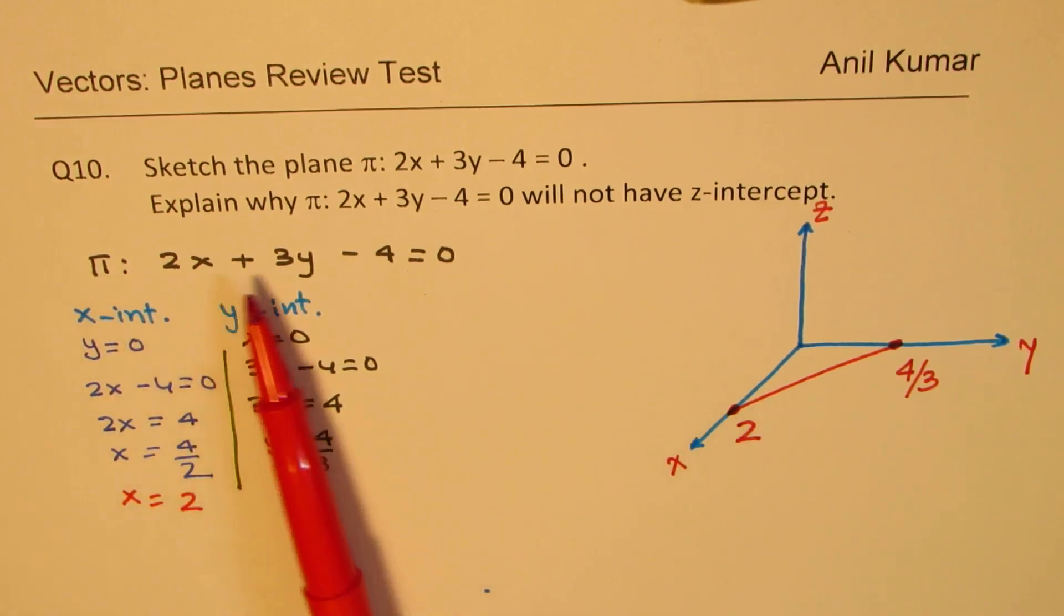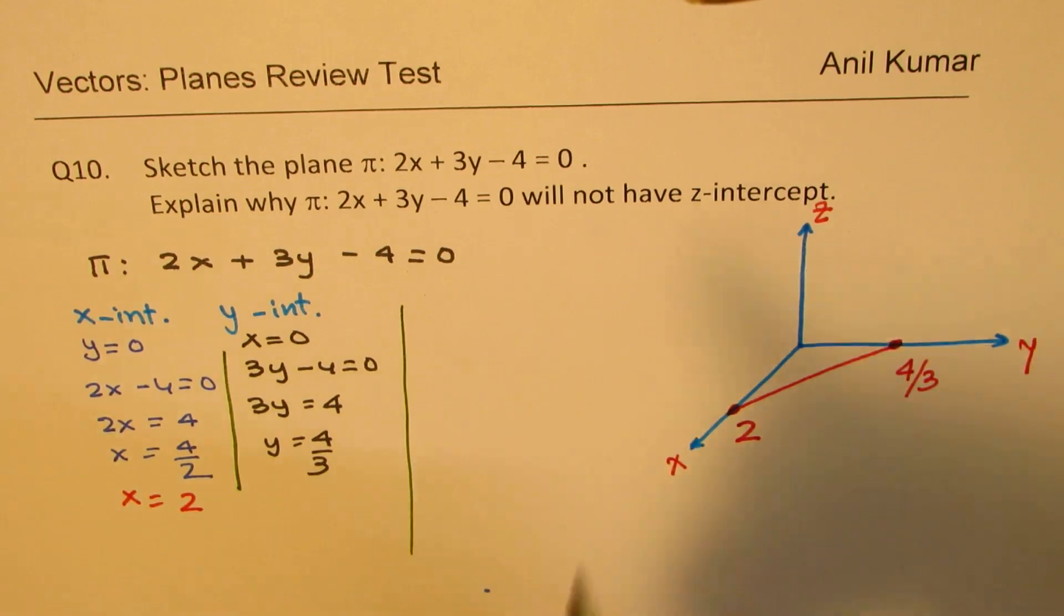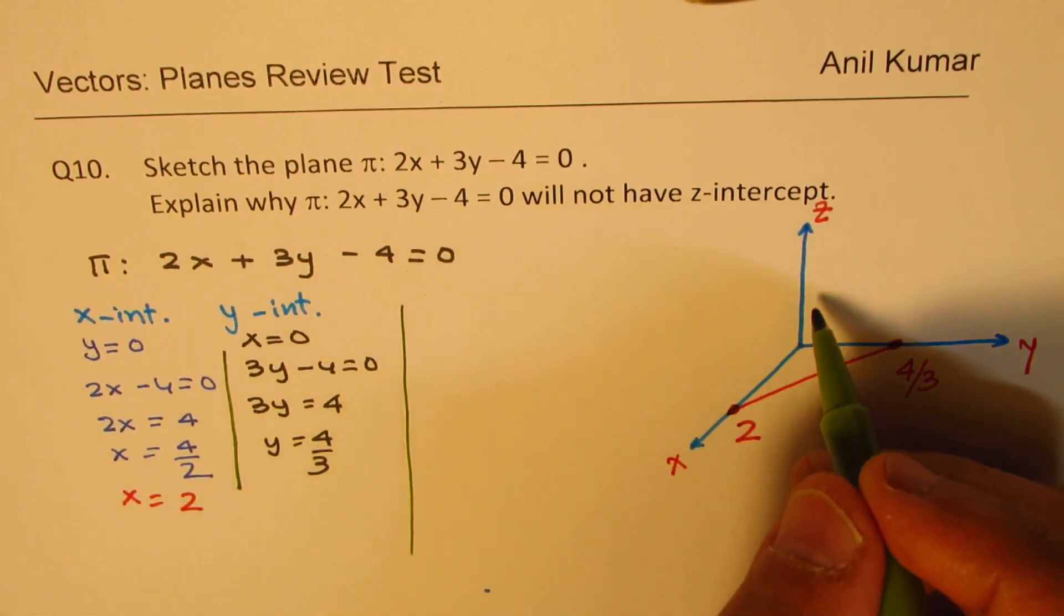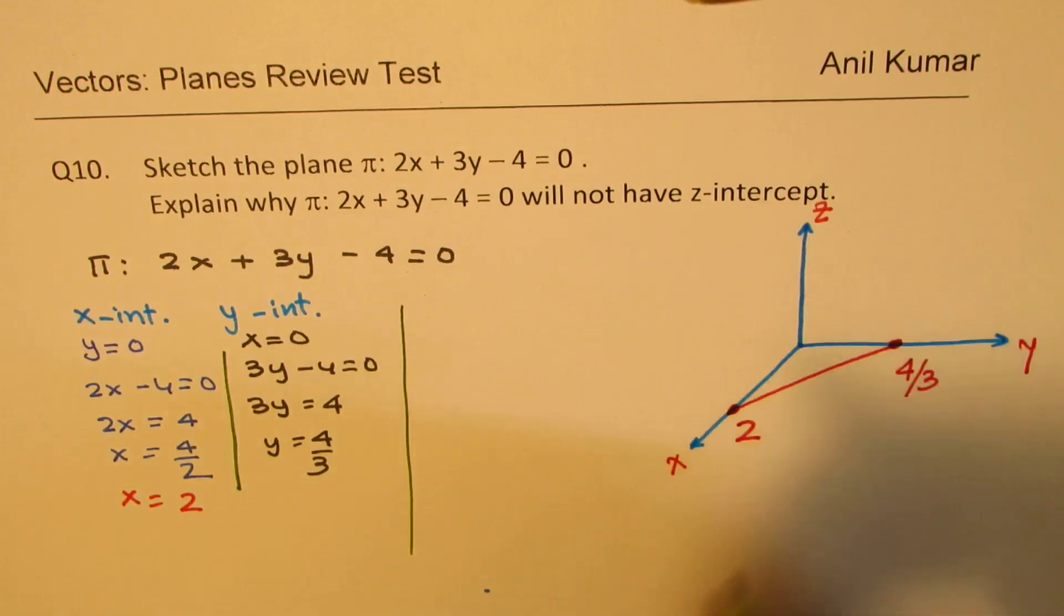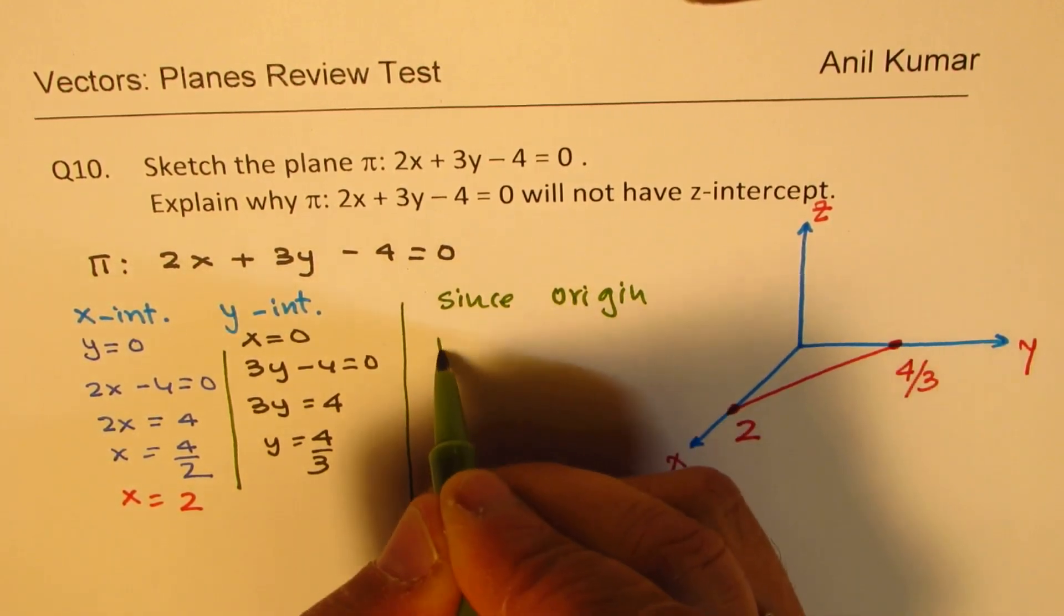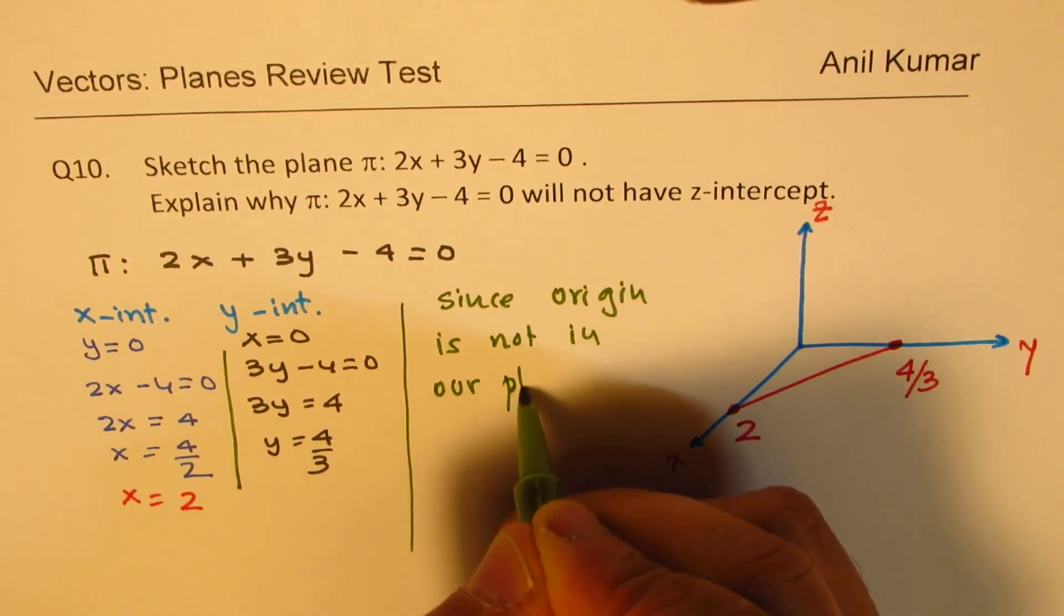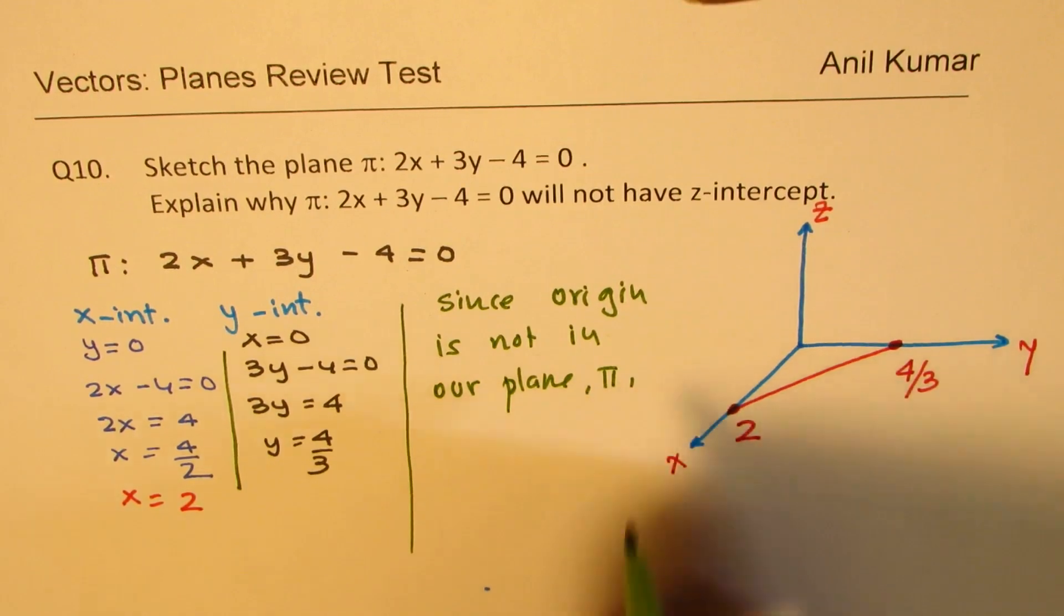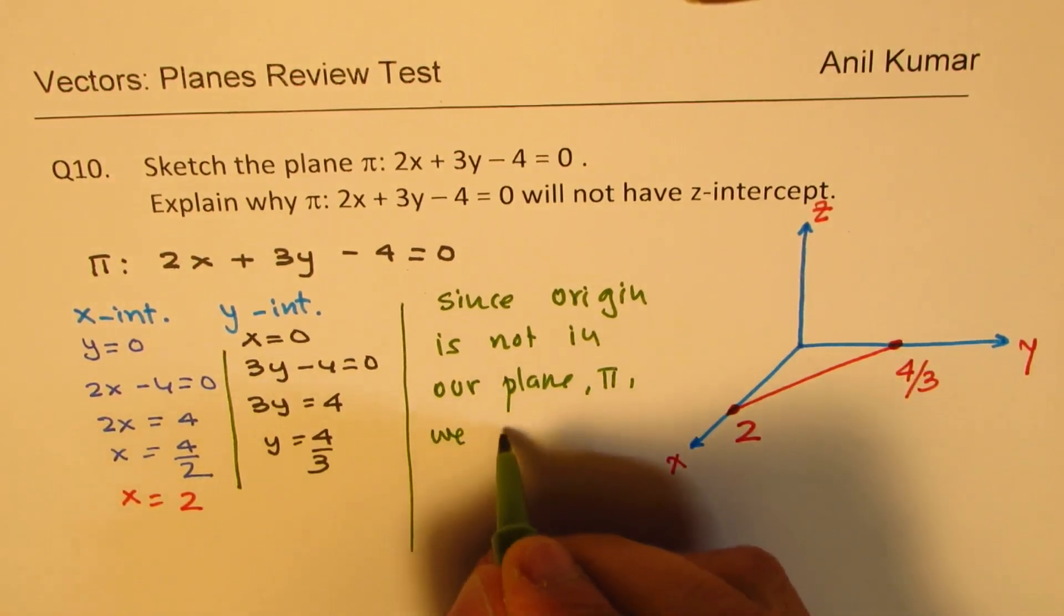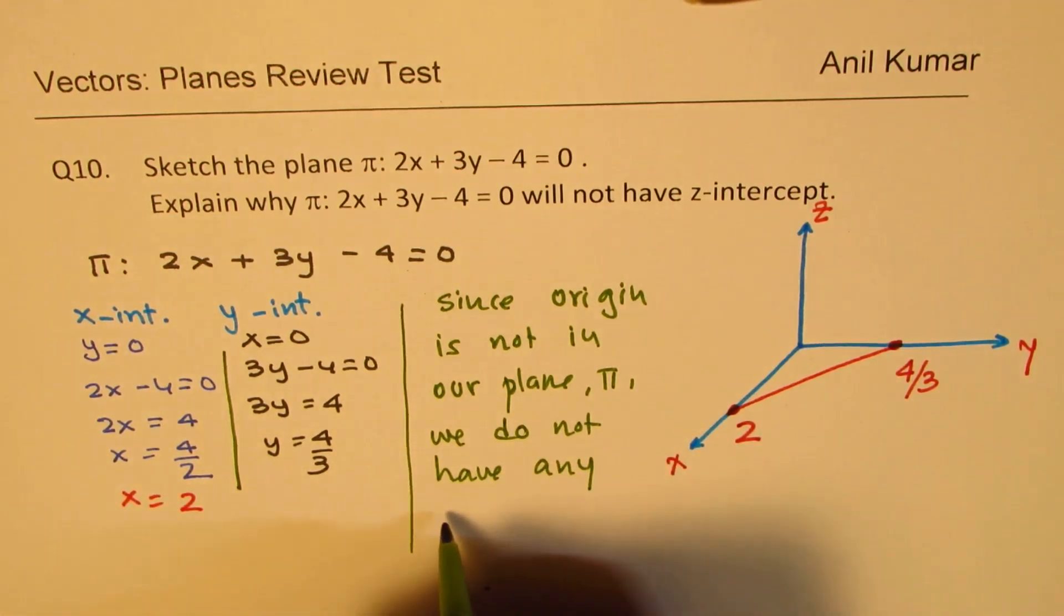Now in this particular case, from the equation, it is very clear that if at all this plane has to intercept the z-axis, where can it intercept? Only when these are 0. That means at the origin, that is the only option. Now since origin is not in our plane, right?